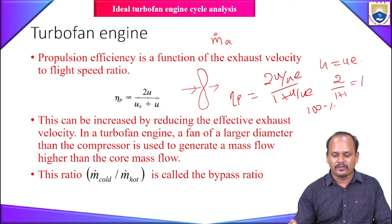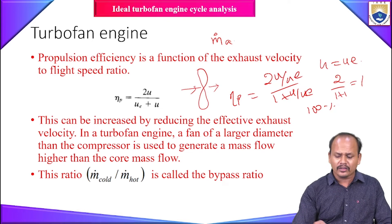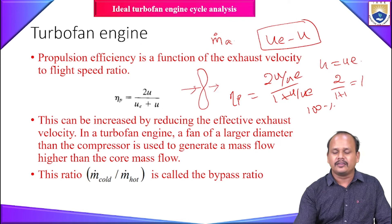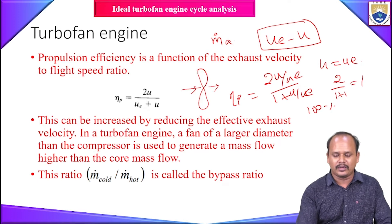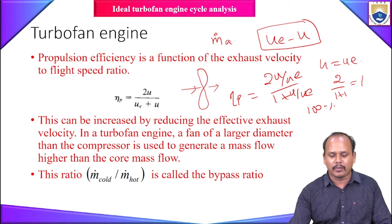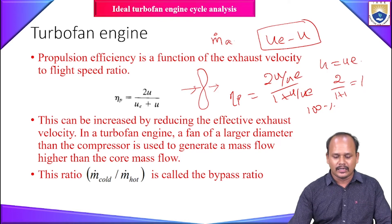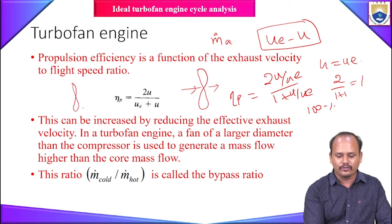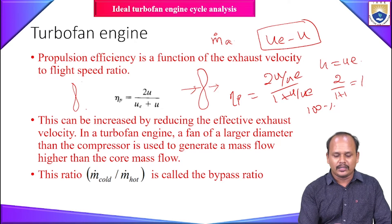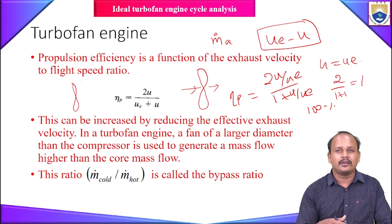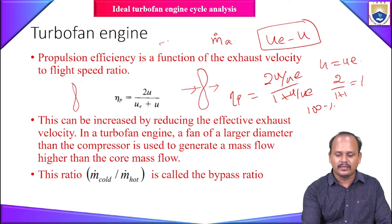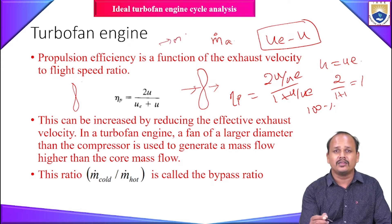This gives the turboprop maximum propulsive efficiency. In a turbojet, the main thrust contribution is due to the difference between exit velocity and flight speed, and this difference is very large, meaning the propulsive efficiency is much less than the turboprop. To address this, we introduce a very large fan in front of the turbojet — a ducted fan inside the intake — which sucks in a huge amount of mass flow and accelerates it to a lower velocity, increasing mass flow rate while reducing the velocity difference.